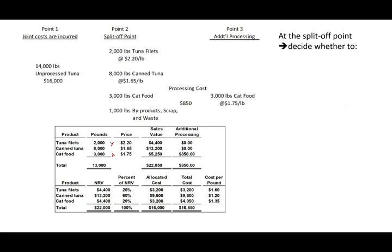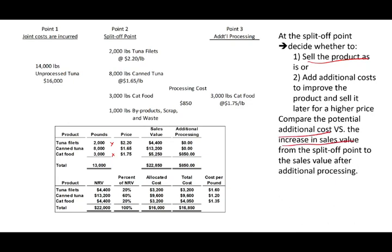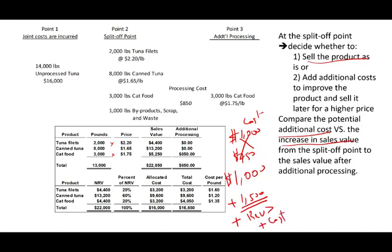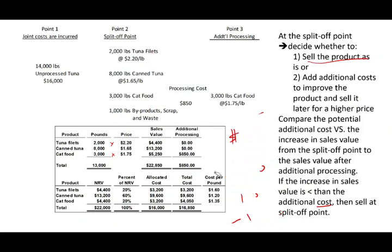At the split-off point, the company has to decide whether to sell the product as-is or do additional processing. How do they make that decision? Simply compare the additional cost to the increase in sales value. If you spend an additional $1,000 but only gain $750 in revenue, you don't do it. But if you spend $1,000 and can sell for $1,500 more, the additional revenue exceeds the additional cost and you proceed with further processing. You only process further when the increase in sales value is greater than the additional cost.